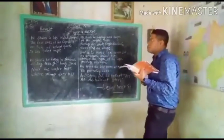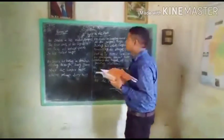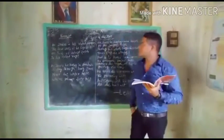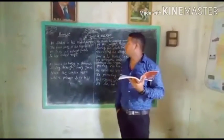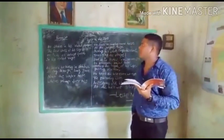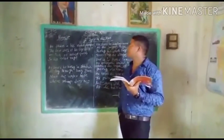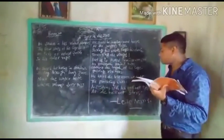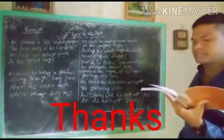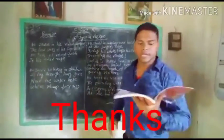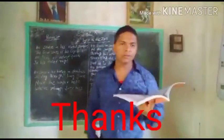So all the students of Class 10, I hope you have understood this poem very well. Once again, this poem's name is 'A Tiger in the Zoo' and the poet of this poem is Leslie Norris. Thank you, Class 10 students.